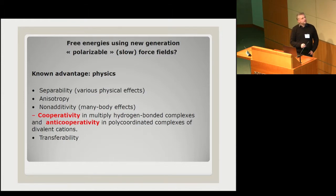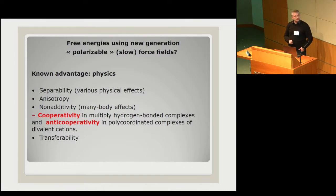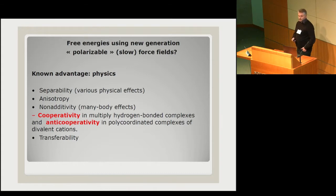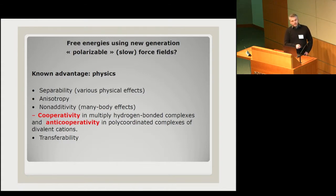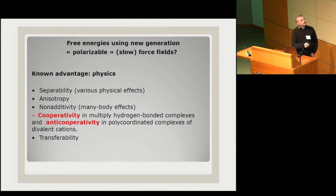Since they are more related to quantum mechanics, they include anisotropy, which can be really important in docking. They also have many-body effects, and many-body effects are really what cause trouble for free energy, because they are not always going in the same direction. You can have cooperative effects in hydrogen-bonded complexes, but for metalloproteins the many-body effects could be anti-cooperative, giving an opposed effect to cooperativity. A pairwise force field will have difficulties there, and because of all that, these force fields are expected to be more transferable.